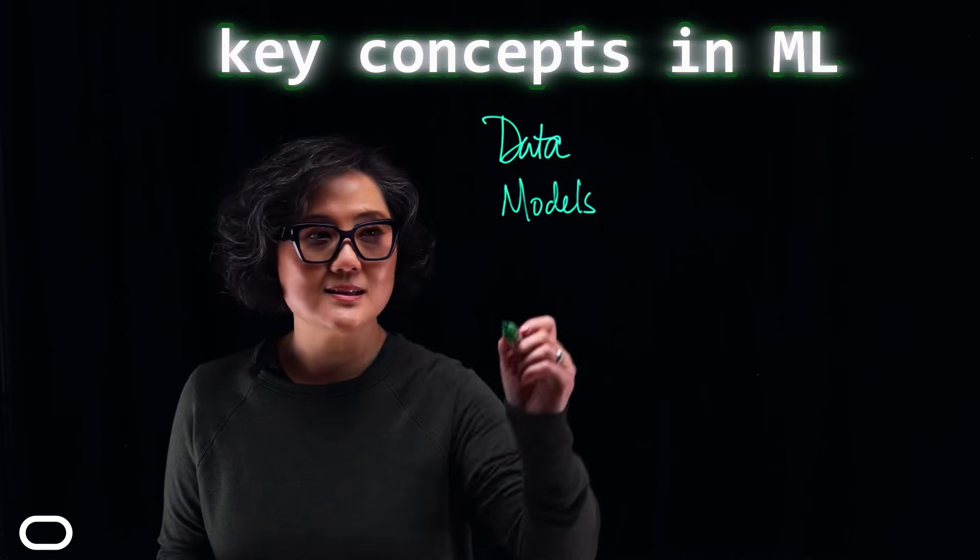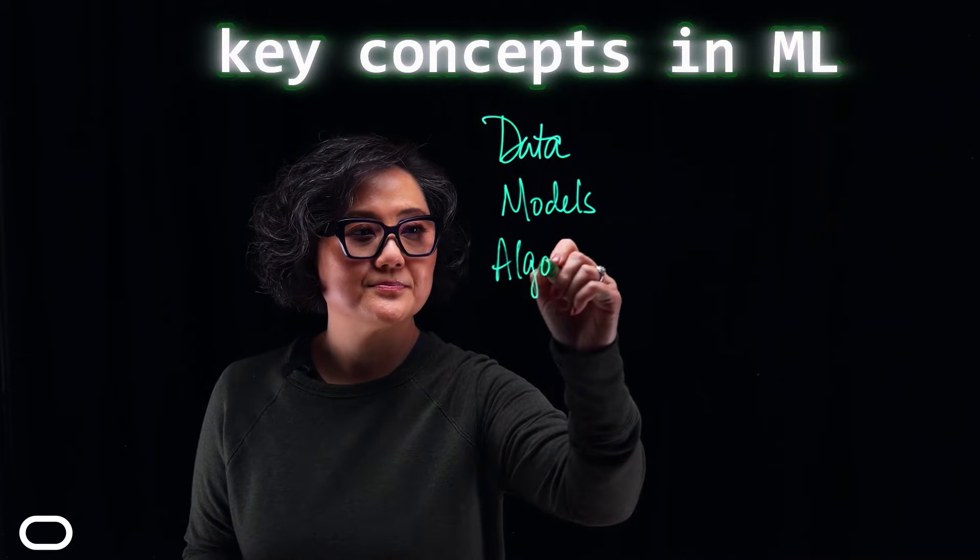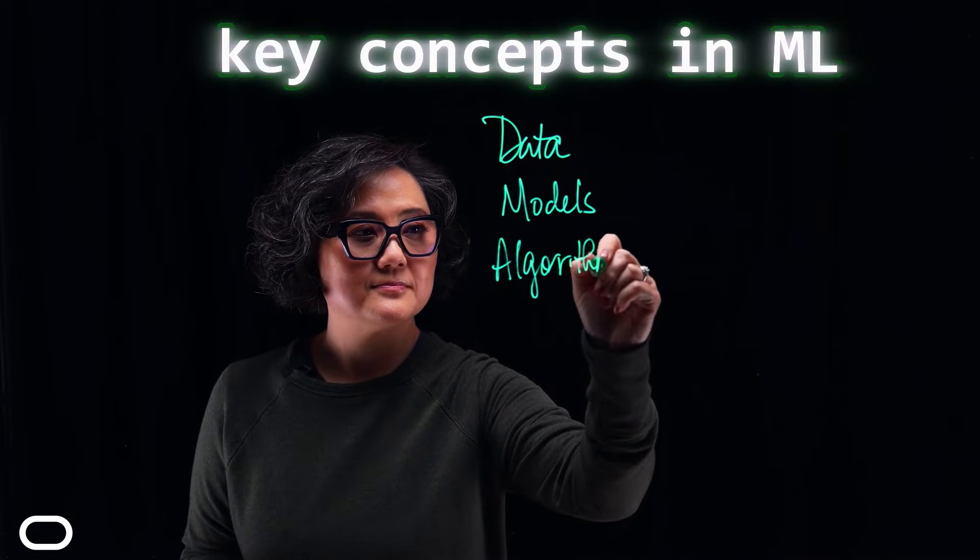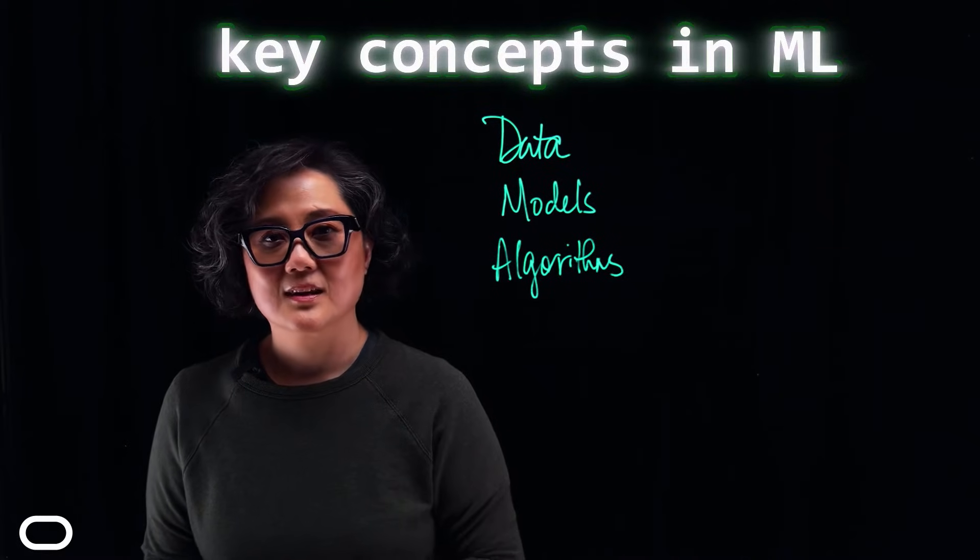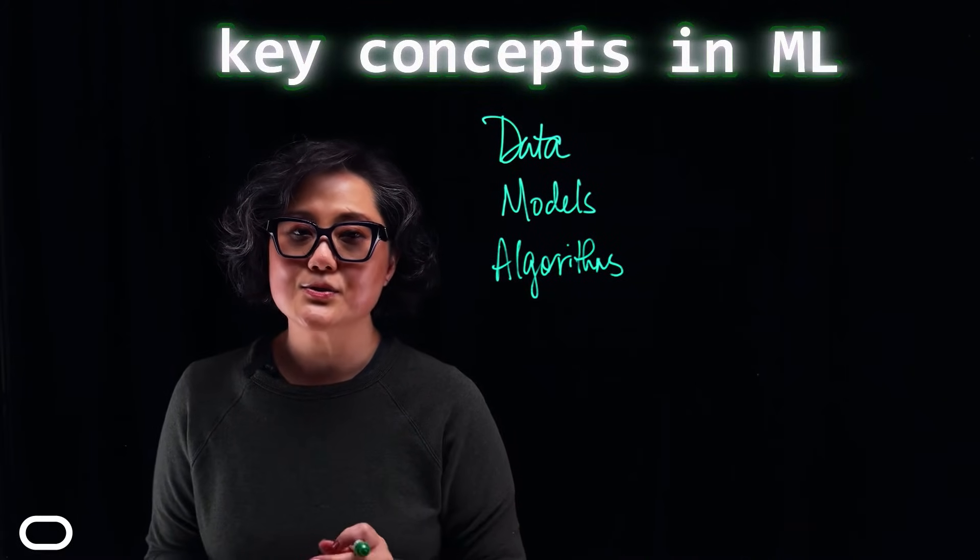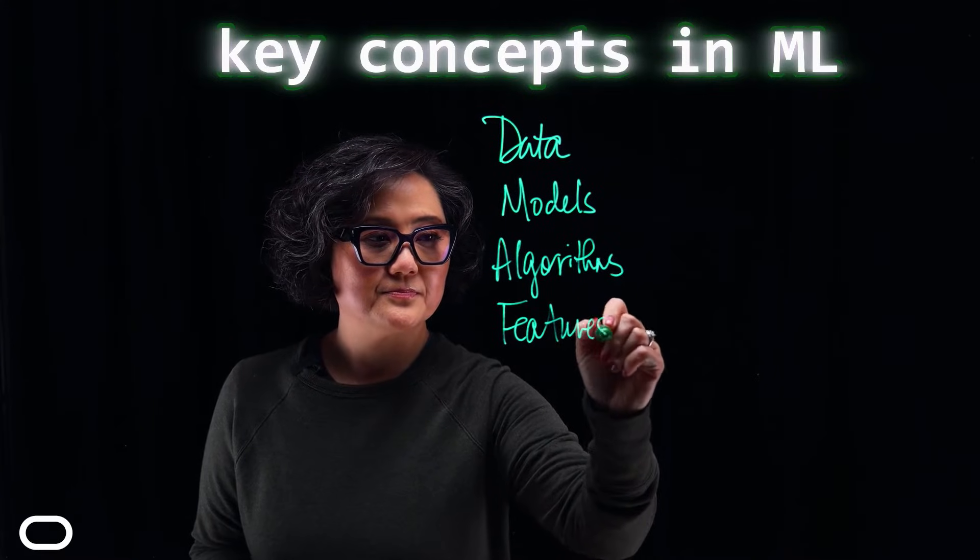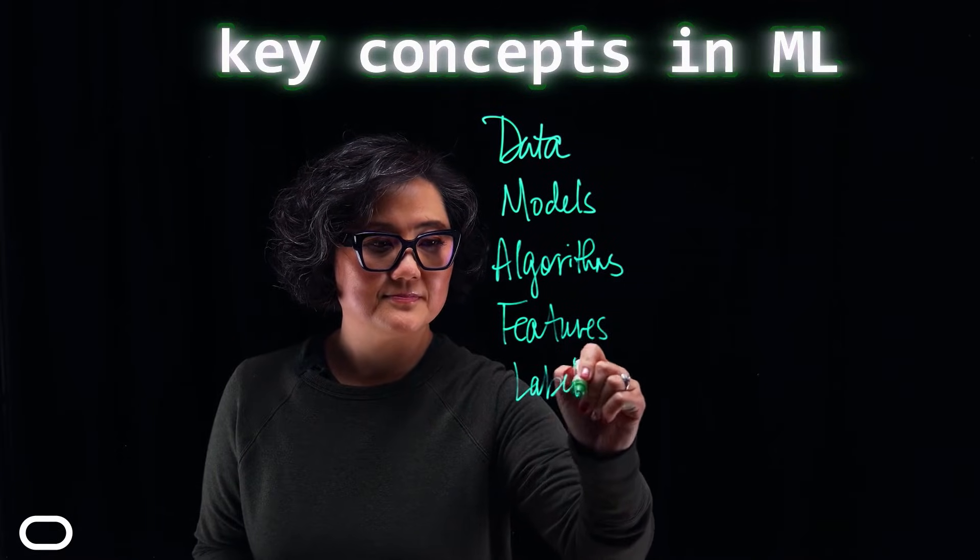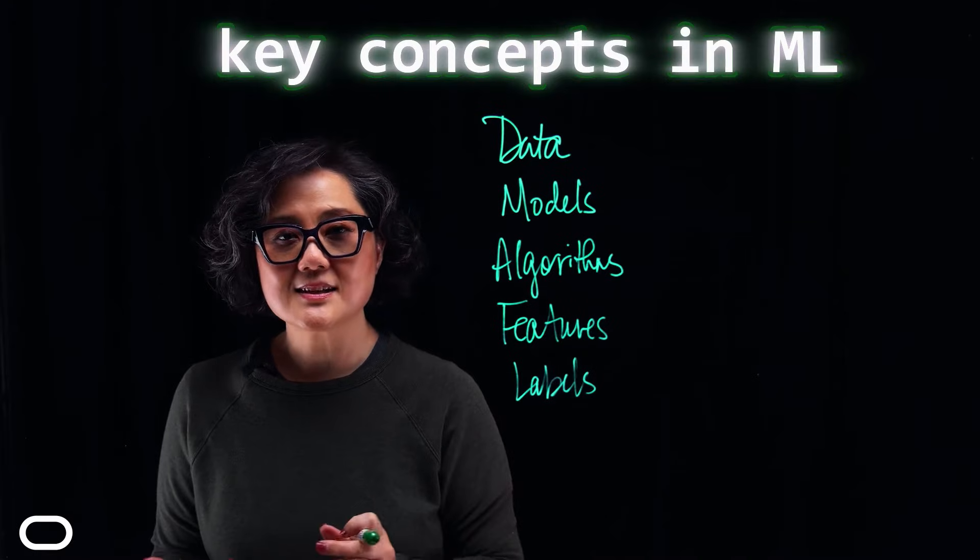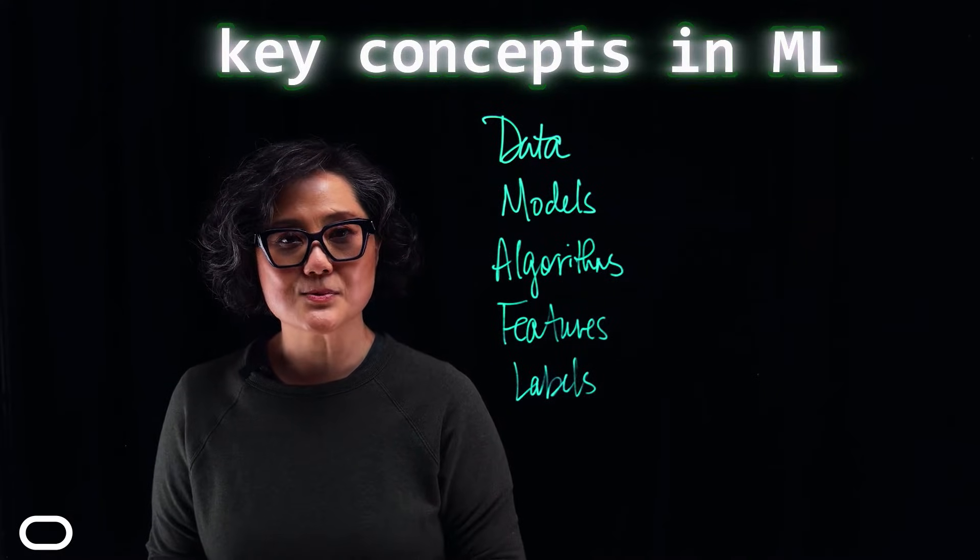Data and models need algorithms for training, which they do with features and labels. Now, let's take a closer look at how these concepts work together.